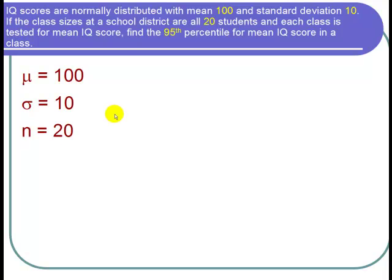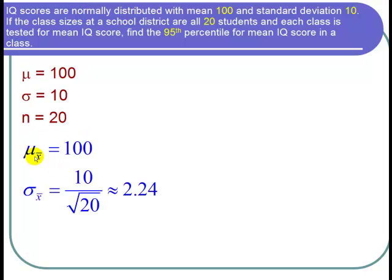So we can use the central limit theorem because IQ scores are normally distributed. And that tells us that mu sub x bar is equal to mu, which is 100. And sigma sub x bar is equal to sigma over the square root of n, or 10 over the square root of 20. And that's about 2.24.